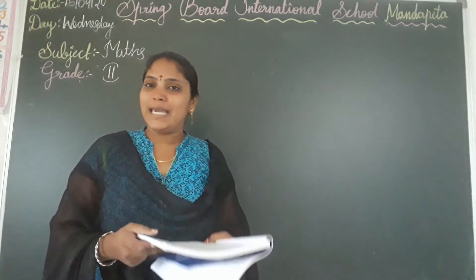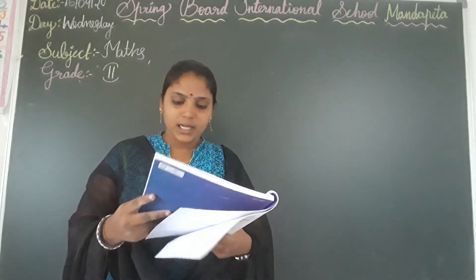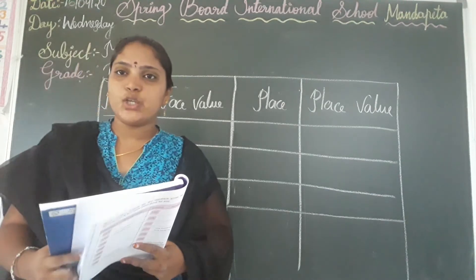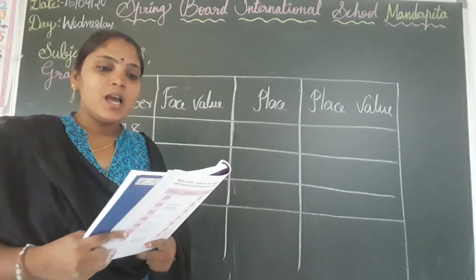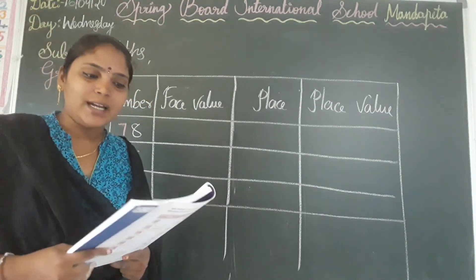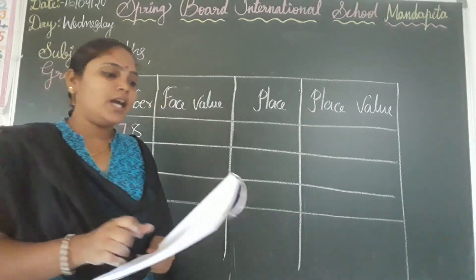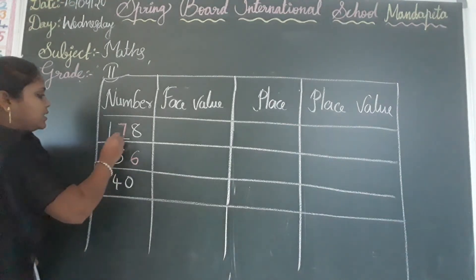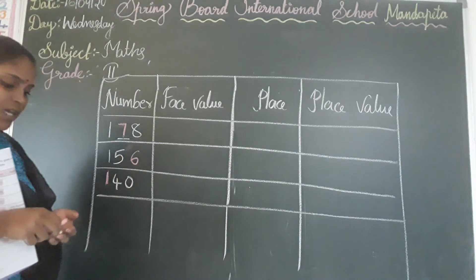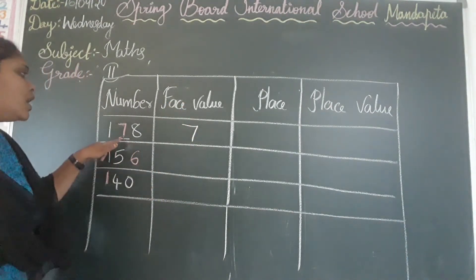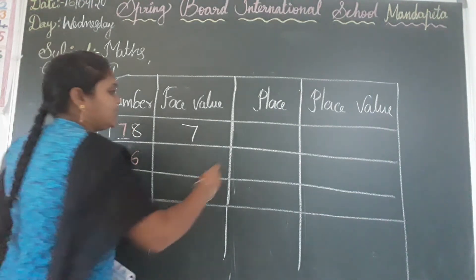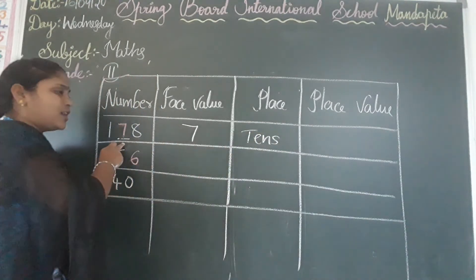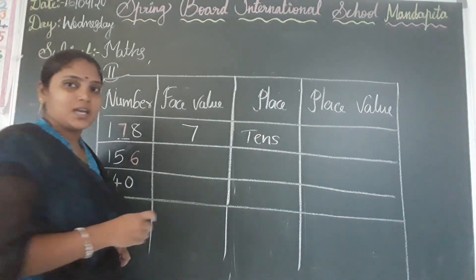Now everyone open page number 15, observe exercise 2C. I will read the question — listen carefully everyone: write the face value, place, and place value of the blue digits in the given numbers; one has been done for you. Here the first digit is 7. The face value of 7 is 7. Observe: 7 is in the 10's place, so write '10's.' The place value of 7 is 70.